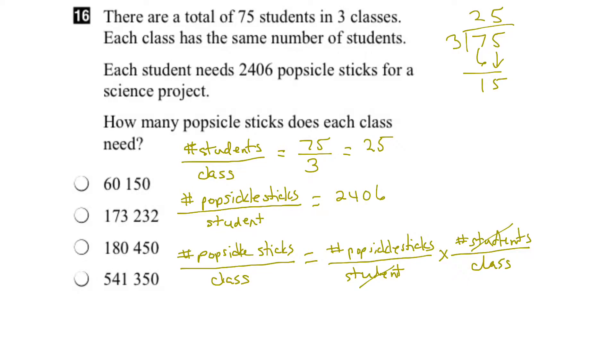So the number of popsicle sticks per student equals 2,406. We can put that right here: 2,406 times the number of students per class, which is 25. So we put that here and do the multiplication. Let's put it up here: 2,406 times 25.